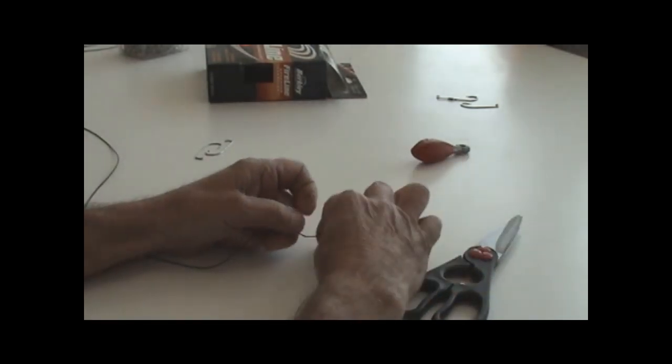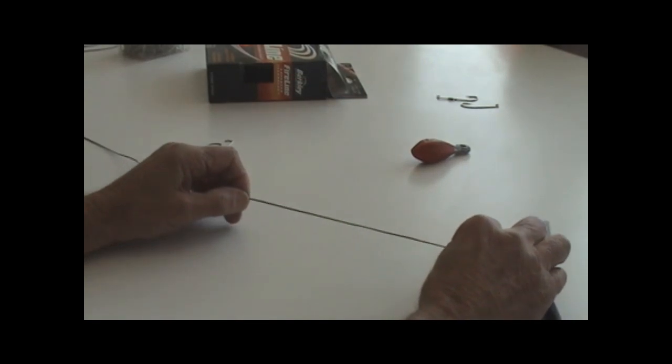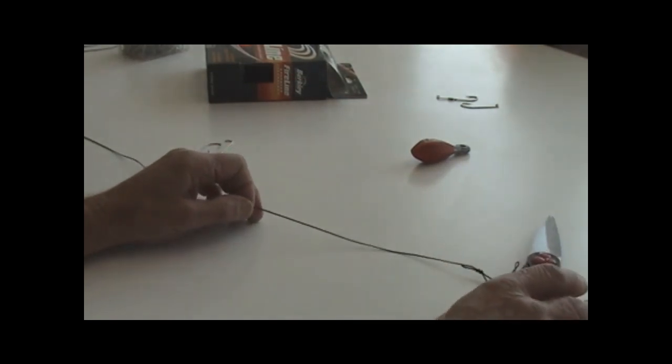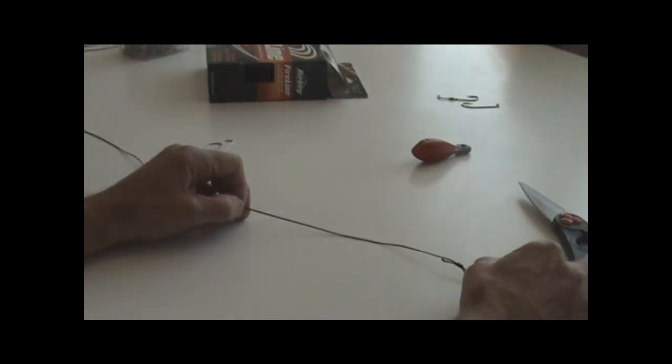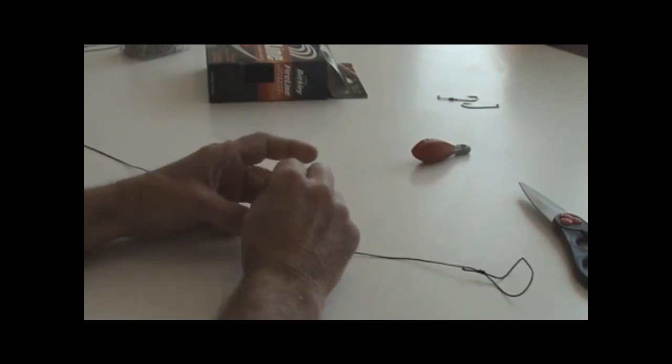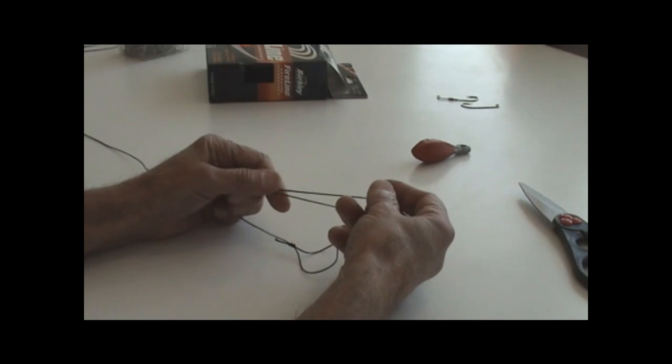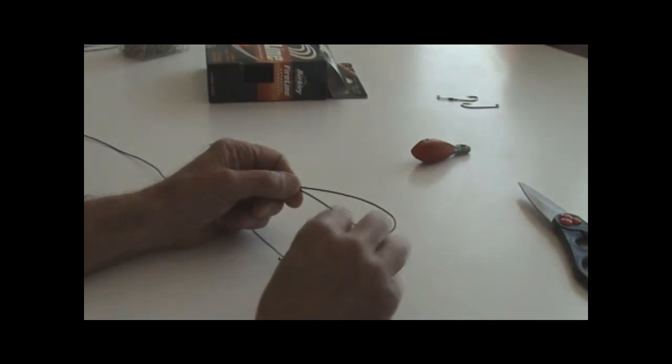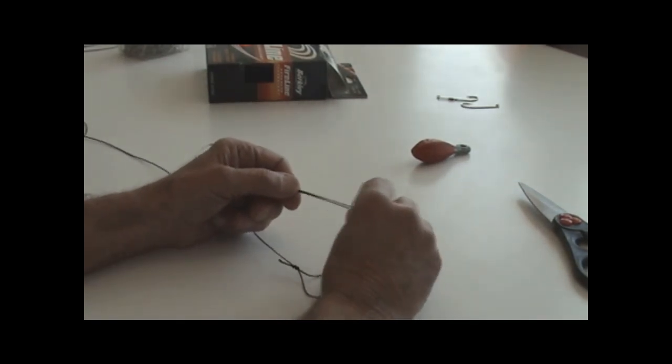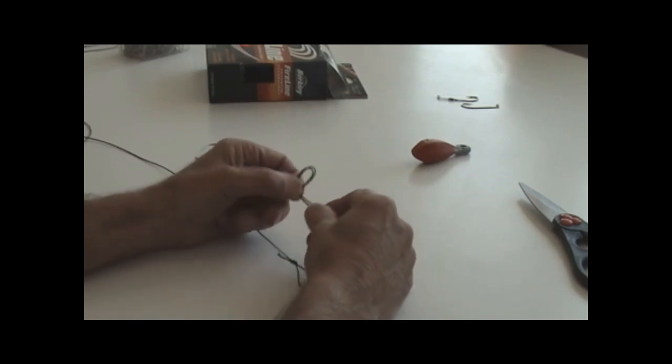Come up your line about six inches, grab the end and pull another loop, and you're going to tie that same knot. Make a loop.